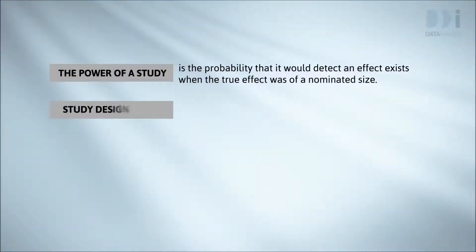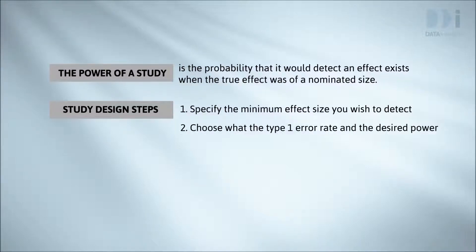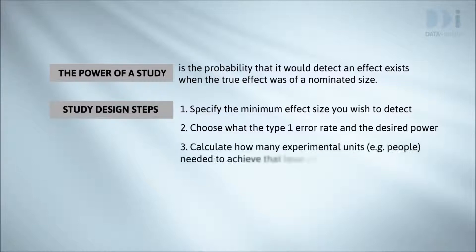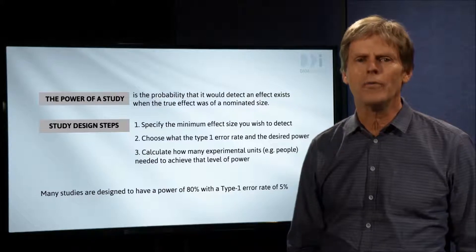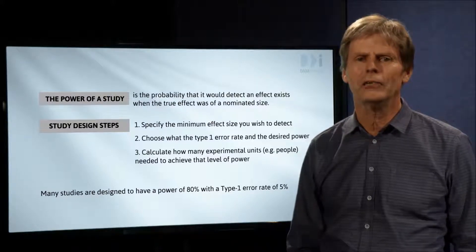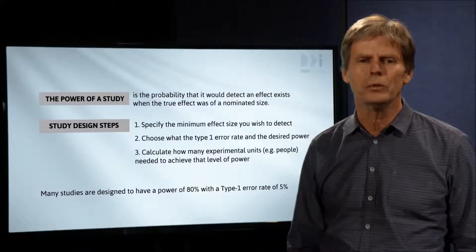So the steps are specify a minimum effect size you want to be able to detect, specify a type 1 error rate and the power you'd like to have, calculate the number of experimental units that you'd need to achieve that level of power. We don't take significant effects very seriously if we know they come from a study that was underpowered for detecting effects of a believable size.